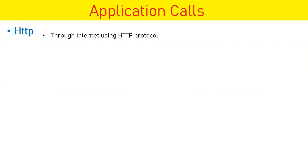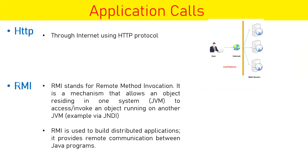We have two types of calls: one is the HTTP call from the web browser using HTTP protocol, and the second is called RMI — Remote Method Invocation. In RMI, a client can directly call applications, methods, or objects deployed in your WebLogic Server. It is a mechanism that allows an object residing in one JVM to invoke an object running on another JVM. When we talk about RMI, it is a JVM-to-JVM call — your client application is a Java application running on one JVM, and your destination application is running on a WebLogic managed server JVM. It is not an HTTP call.